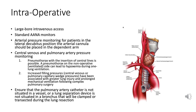Central venous and pulmonary artery pressure monitoring provide valuable information about cardiovascular status, particularly the function of the right heart and lungs, giving insights about preload, afterload, and cardiac output. When inserting central lines, there is a risk of puncturing the lung leading to pneumothorax. A pneumothorax on the non-operative side is particularly concerning during one-lung ventilation because it can significantly compromise oxygenation.